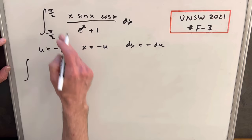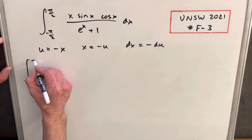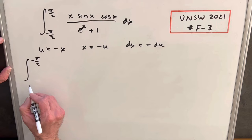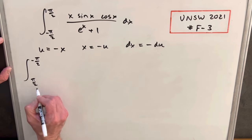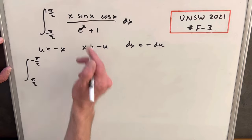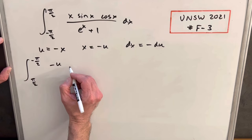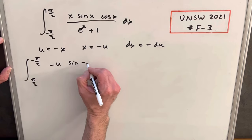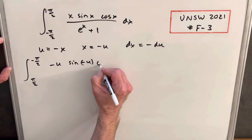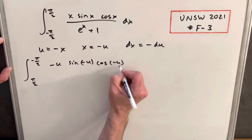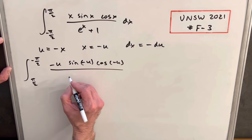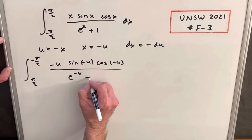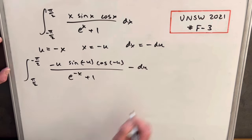Let's do the substitution and see what we have. First, we'll update our bounds. Plugging pi over 2 in here, it's just going to change the sign, so we'll have minus pi over 2 to plus pi over 2. Our x is going to be minus u. We're just changing the sign in everything, so we'll plug in our minus u for x, sine of minus u, cos of minus u. Same thing here, e to the minus u plus 1 minus du.